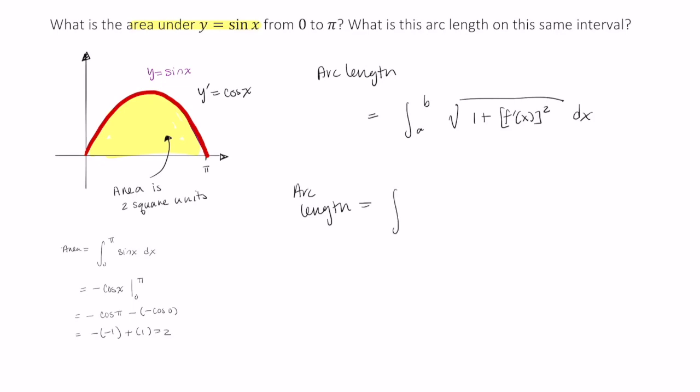So the arc length is equal to the integral from 0 to π of the square root of 1 plus cosine squared x dx.